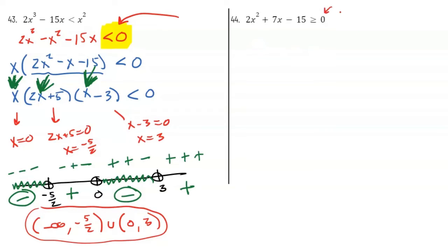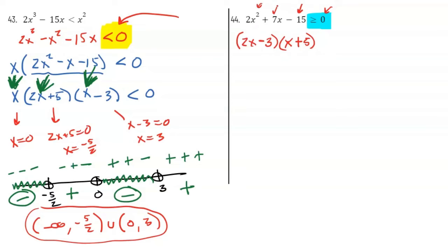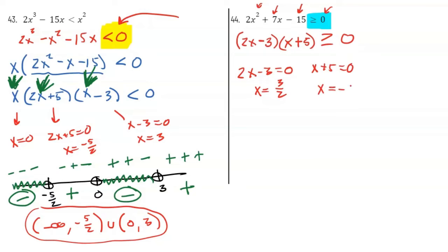Let's take a look at the next one. I already have a zero on one side — I'm looking for numbers that are greater than or equal to zero. I need to find my zeros by factoring this quadratic 2x² − 7x − 15. The only way to split 2x² is 2x and x. I split 15 with 3 and 5: I get (2x − 3)(x + 5). Setting each factor to zero: 2x − 3 = 0 gives x = 3/2, and x + 5 = 0 gives x = −5. Those are my critical values.